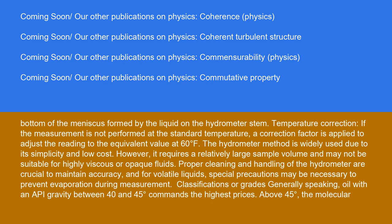The hydrometer method is widely used due to its simplicity and low cost. However, it requires a relatively large sample volume and may not be suitable for highly viscous or opaque fluids. Proper cleaning and handling of the hydrometer are crucial to maintain accuracy, and for volatile liquids, special precautions may be necessary to prevent evaporation during measurement.